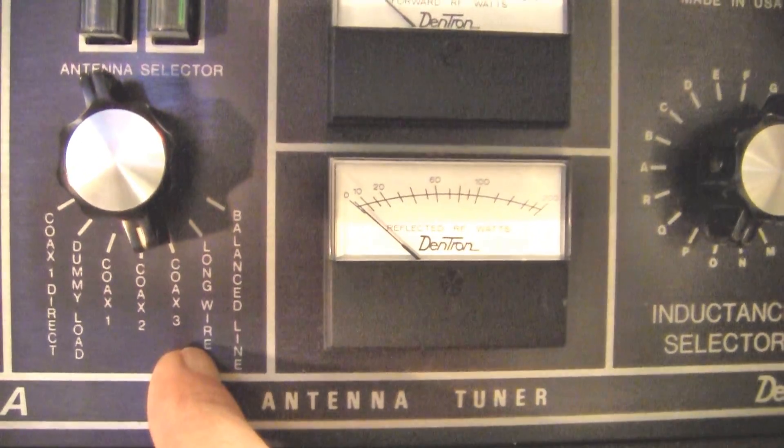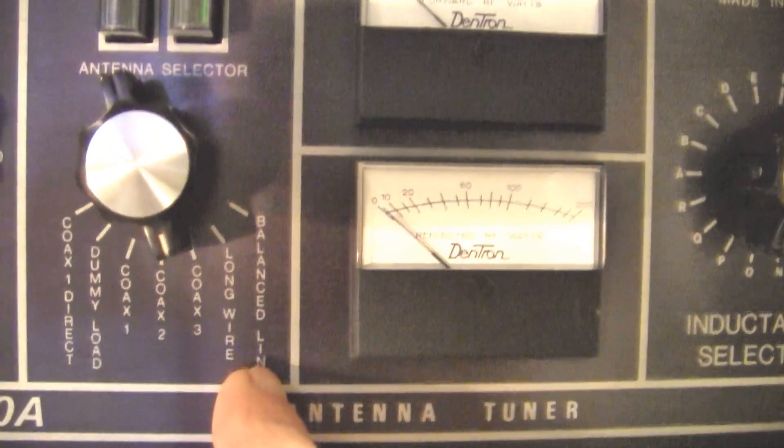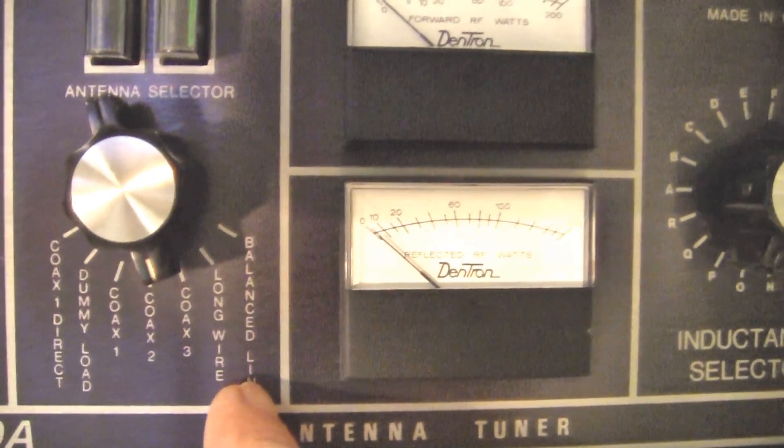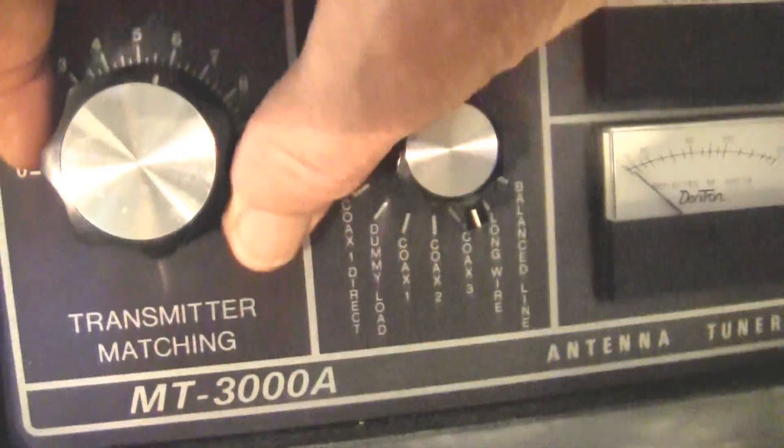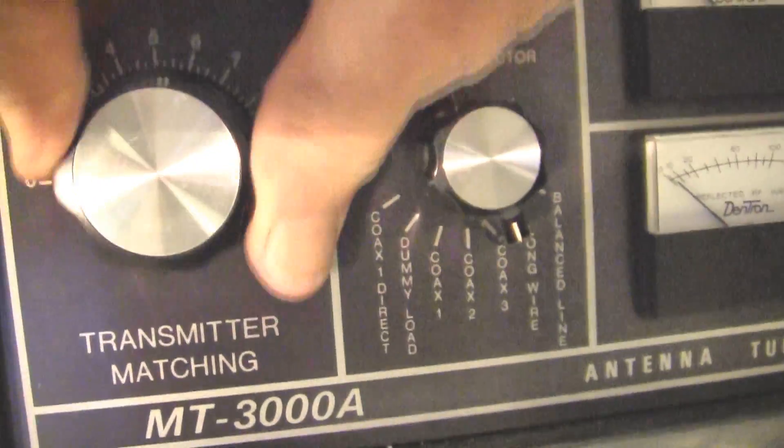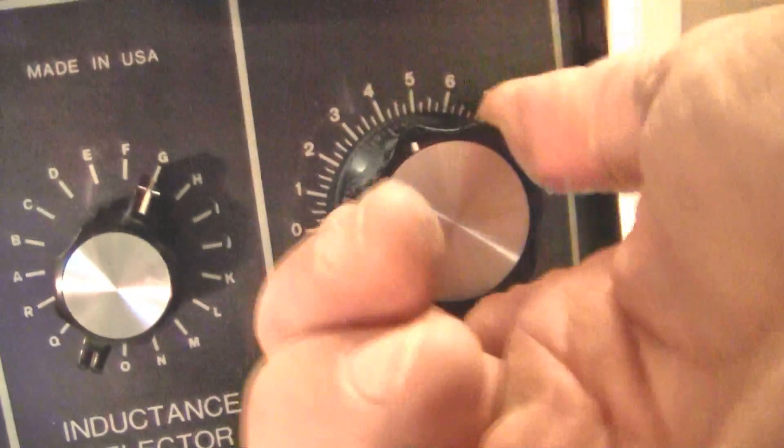Not directly, but through the tuner, using the tuner. And here's to the balanced line using an internal toroid or matching transformer for a balanced line. Here we have the standard transmitter matching capacitor. And over here to the right, the antenna matching capacitor.